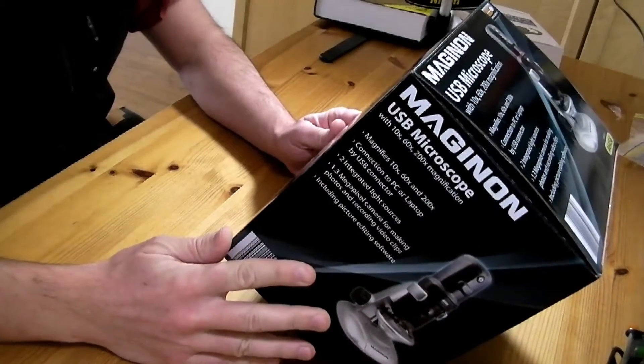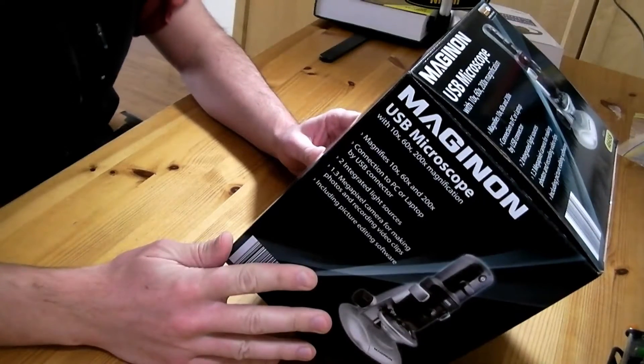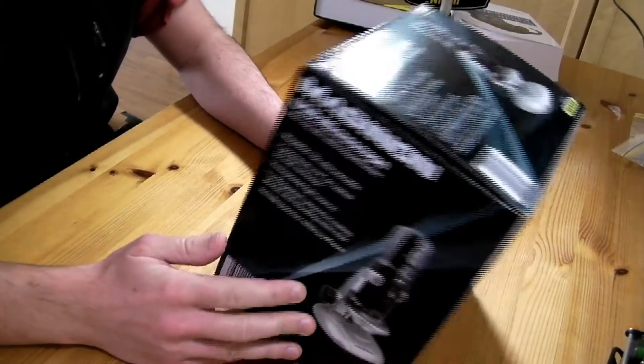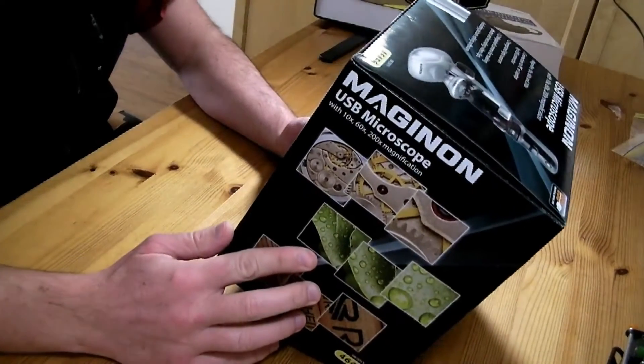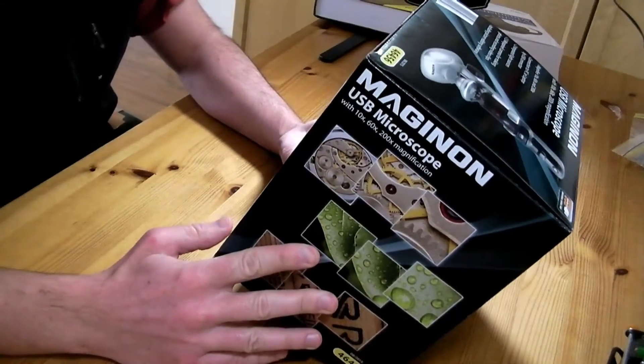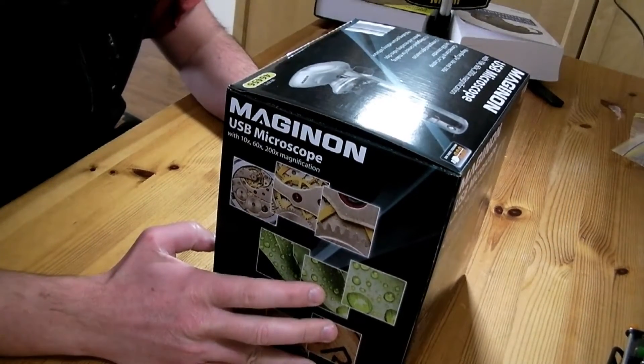It's a USB microscope from a company called Maginon, I believe. I hope I'm pronouncing this correctly. A really nice thing about this microscope is that it offers 200x magnification advertised and I got it for only $50 Australian.